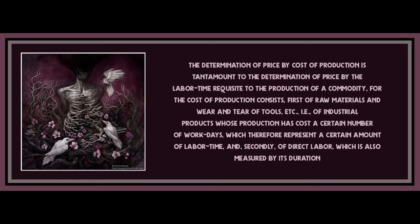The determination of price by the cost of production is not to be understood in the sense of the bourgeois economists. The economists say that the average price of commodities equals the cost of production — that is the law. The anarchic movement in which the rise is compensated for by a fall and the fall by a rise, they regard as an accident. We might just as well consider the fluctuations as the law and the determination of the price by cost of production as an accident, as, in fact, done by certain other economists.